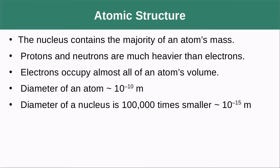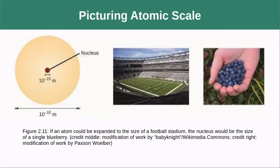The nucleus contains the majority of the atom's mass. Protons and neutrons are much heavier than electrons, while electrons occupy most of the atom's volume — they're actually pretty far from the nucleus on the atomic scale. If the diameter of an atom is approximately 10⁻¹⁰ meters, the diameter of a nucleus is only 10⁻¹⁵ meters. To put that in perspective: if an electron were flowing around a baseball stadium, the nucleus would only be the size of a blueberry at the very center — and everything in between is empty space.